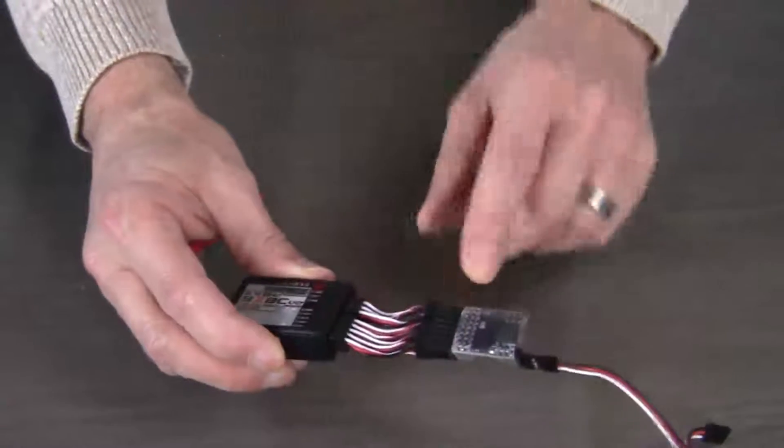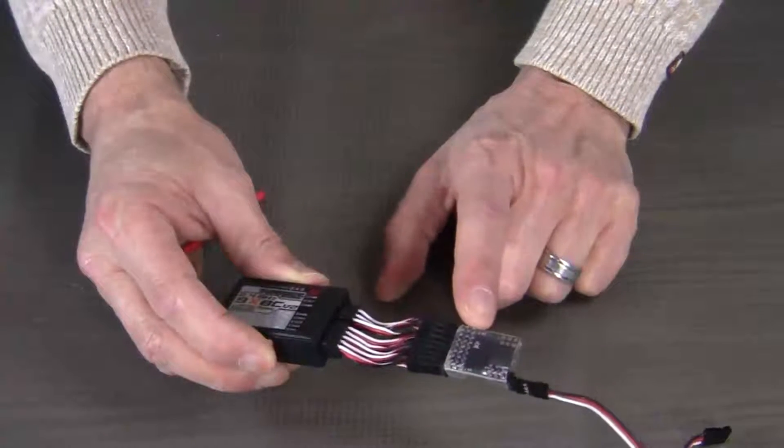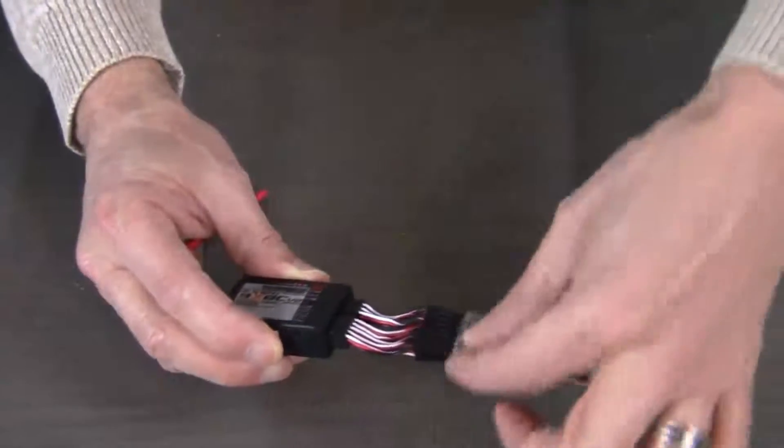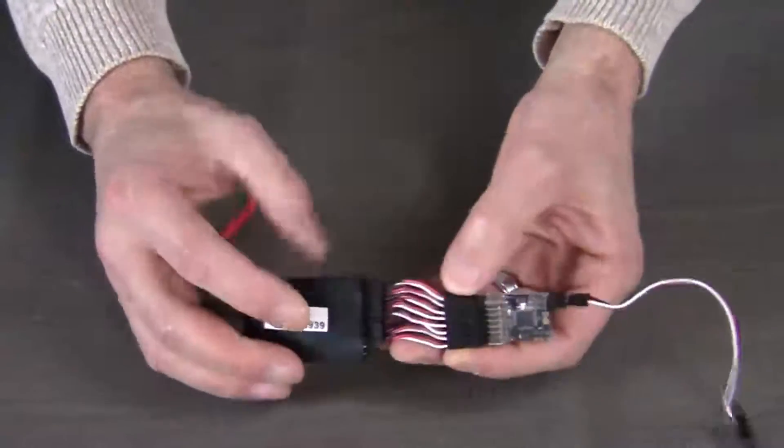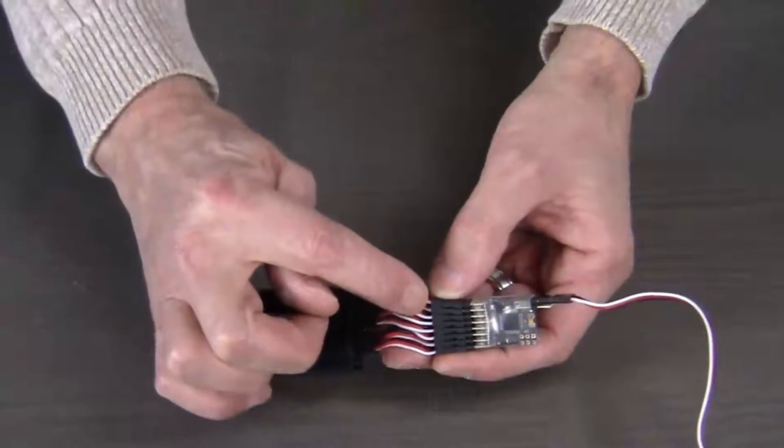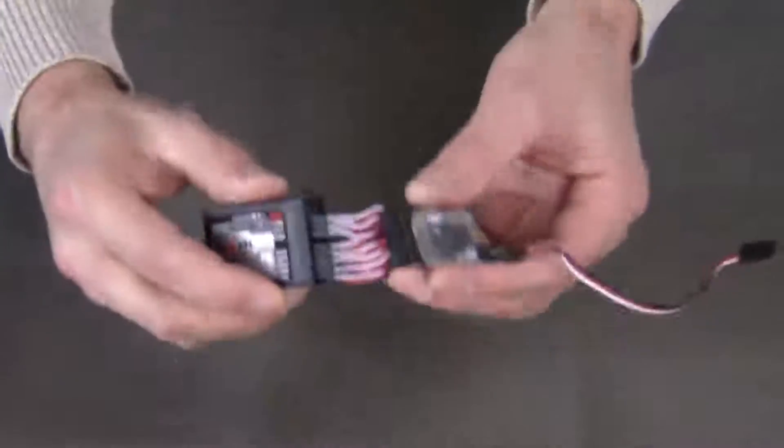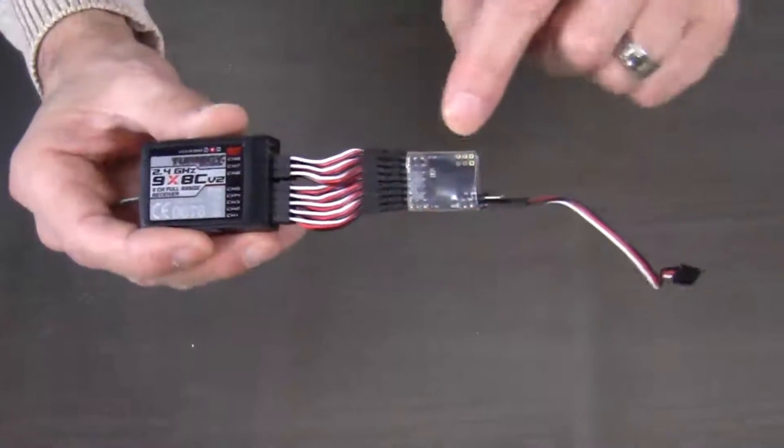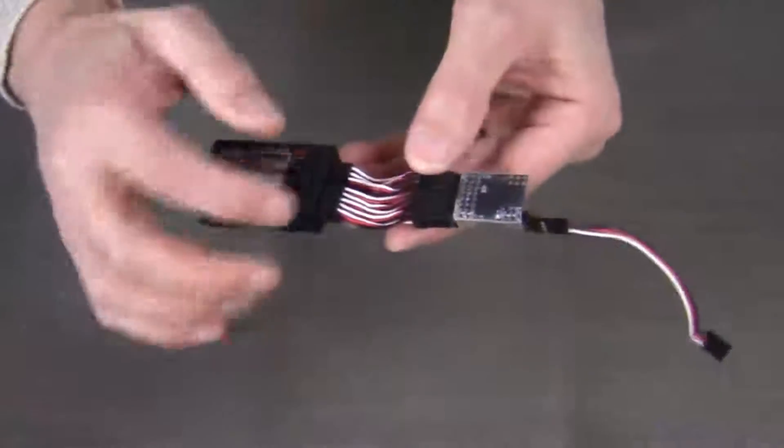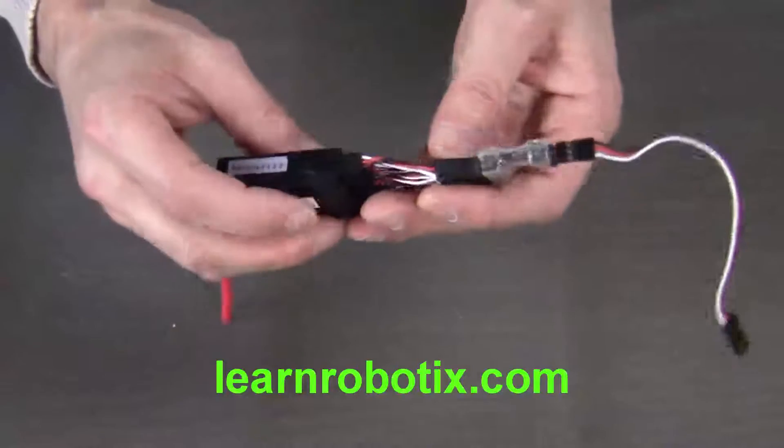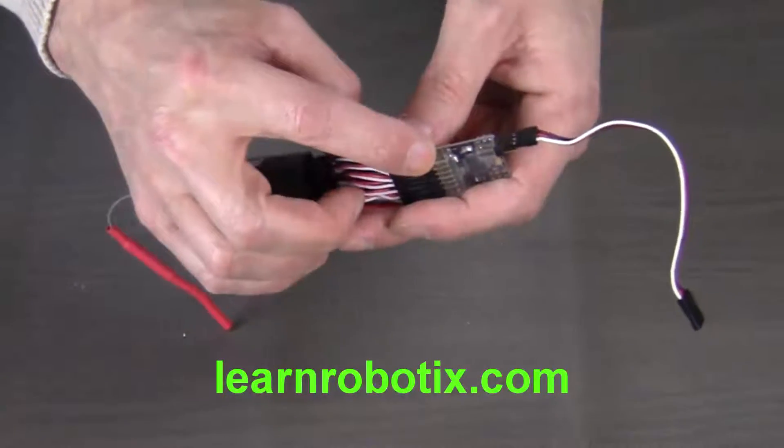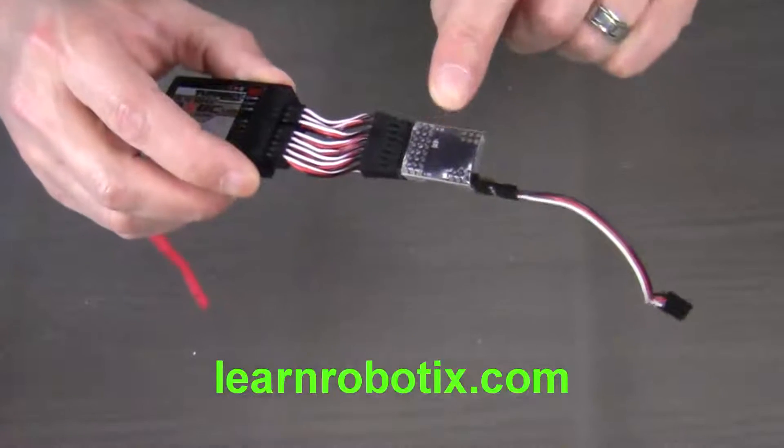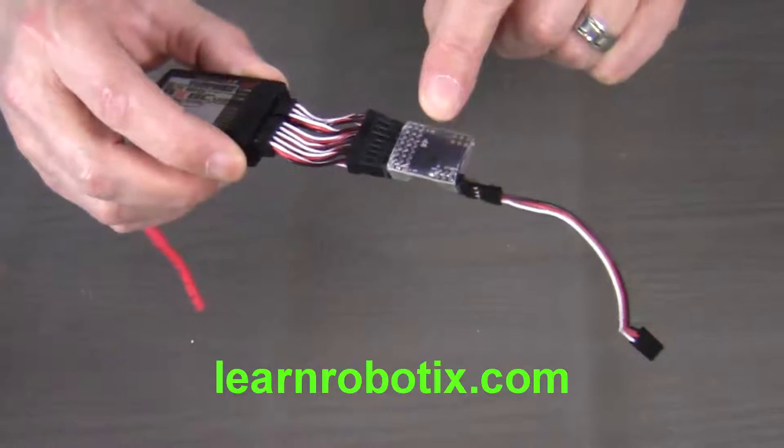However, when you go to connect it to the PPM encoder, you have to give each one of these wires a twist so that the white signal wire is on the bottom. This is looking at the PPM encoder from the underside. So you have to give each connector a twist so that the white signal wire is on the bottom when you're looking at the underside of the encoder.